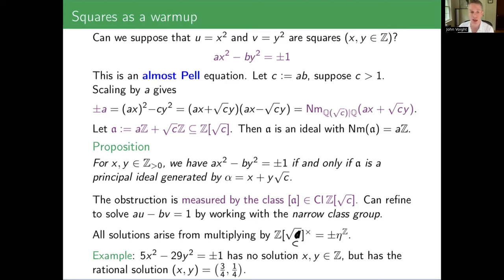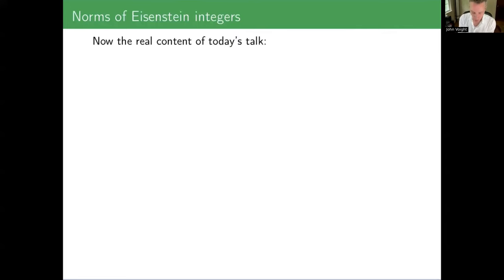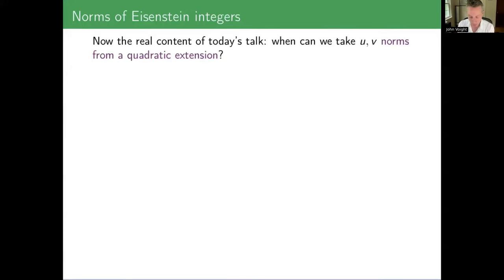So now comes the real content of today's talk after that warm-up. I hope you're feeling motivated and following along. I asked for congruence conditions, then I asked for squares, and today we are going to try to understand when I can take U and V to be norms from a quadratic extension. We saw a norm equation on the previous slide — staying in the vibe of that.